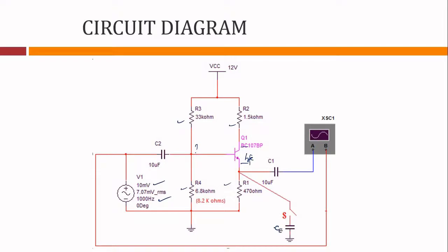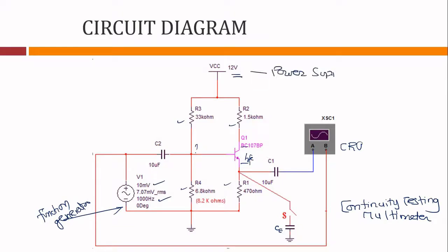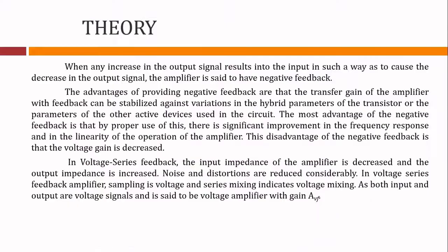Apply a signal of 1 kHz and 20 mV as the test signal; if all connections are properly done, the output will be observed on the CRO. A bypass capacitor is connected across the emitter resistance. When the switch is closed the feedback ceases to exist; when it is open, feedback exists. The coupling capacitors are used to block DC components and pass only the AC signal. Components required include a CRO, a function generator, and a power supply providing 12 volts.